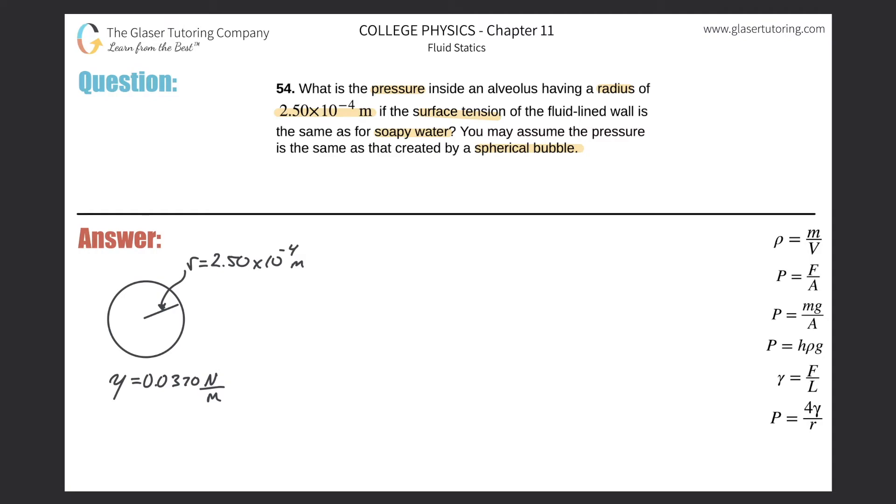But in any case, to solve a problem like this, it's fairly straightforward if you know this formula. So the pressure is equal to 4 times that of the surface tension, then divide it by the radius of that spherical object.